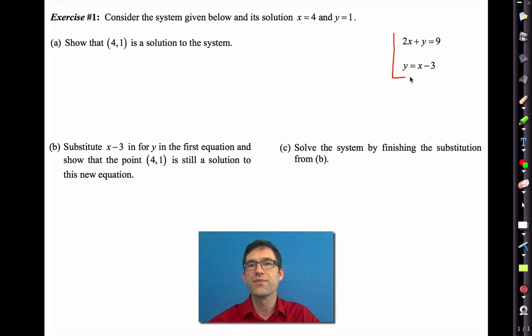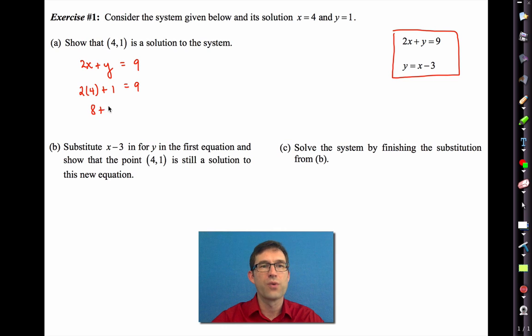In the first problem, we have this system 2x plus y equals 9 and y equals x minus 3. Letter A asks us to show that 4 comma 1 is a solution to the system. So you've seen this many times. I'd like you to pause the video and work through part A. All right, let's do it. So what we have to do to always show that something is a solution to a system is show that the point makes both equations true. So we're going to take that 4, put it in for x, put 1 in for y. We'll get 2 times 4 is 8, 8 plus 1 is 9, 9 is equal to 9. Check. Then we've got y equals x minus 3. This is going to be even easier. We'll put 1 in for y, we'll put 4 in for x. 4 minus 3 is 1. So yeah, right? True, true, gives me yes. All right.